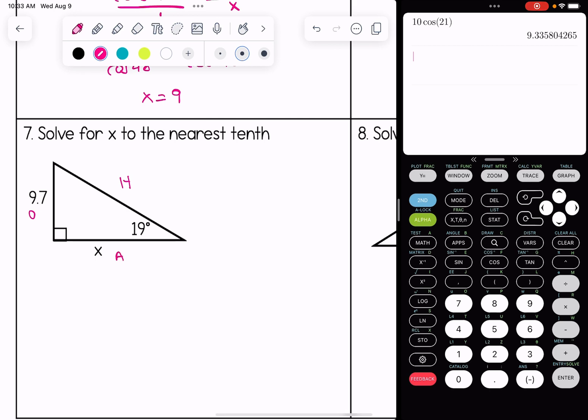Since there's something on the opposite and adjacent, that's the TOA part, so tangent. Tangent of 19 is equal to 9.7 over x.